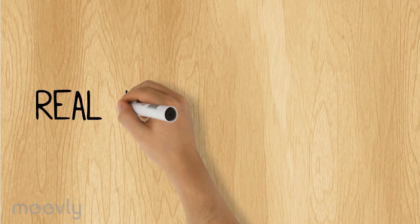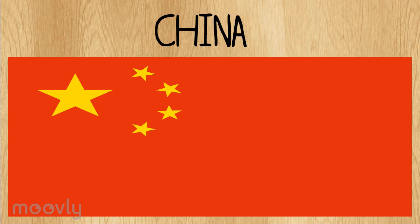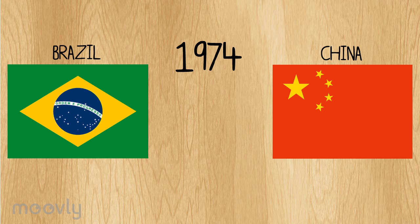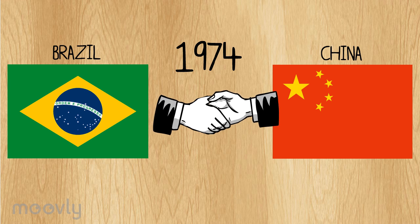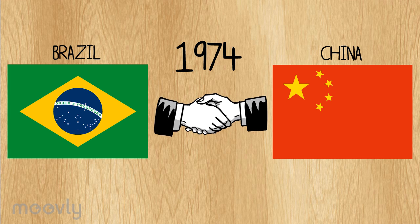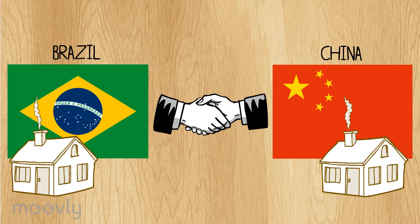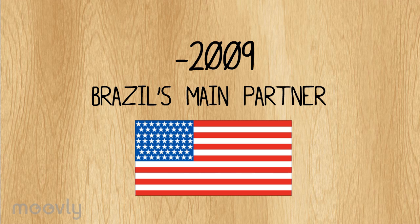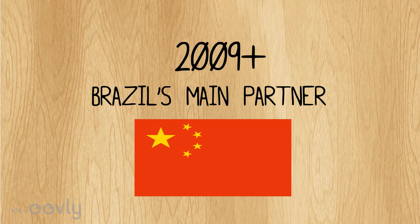Now we will discuss the economic partnership between Brazil and China. In 1974, diplomatic relations were enhanced by the establishment of a Brazilian embassy in Beijing and a Chinese embassy in Brasilia. In addition, in 2009, China even replaced the US as Brazil's number one international trading partner.